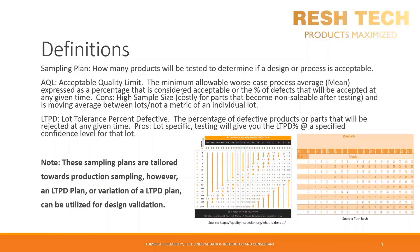Let's define a sampling plan. A sampling plan tells us how many products will be tested to determine if a design or process is acceptable. We're going to cover two types of sampling plans: AQL Sampling Plans and LTPD Sampling Plans. AQL stands for Acceptable Quality Limit, which is the minimum allowable worst-case process average expressed as a percentage considered acceptable — or the percentage of defects that will be accepted at any given time. A downside to AQL Sampling Plans is that they require a high sample size, so if you are performing any kind of destructive testing that degrades a product to the point where it cannot be sold to a customer, it can be very costly to your company.